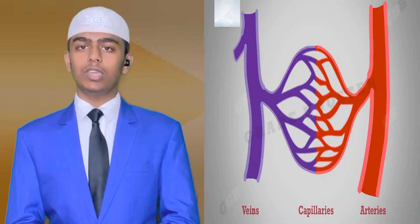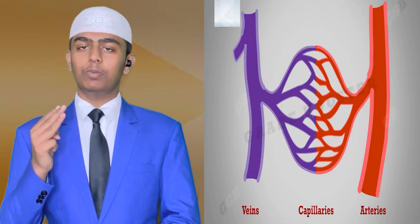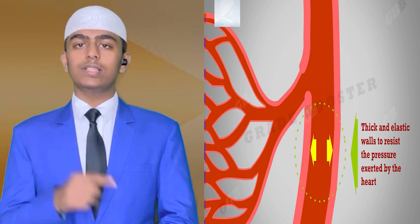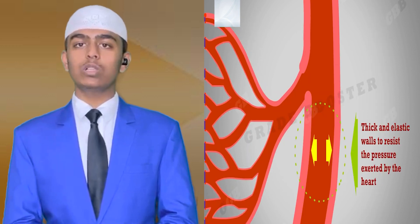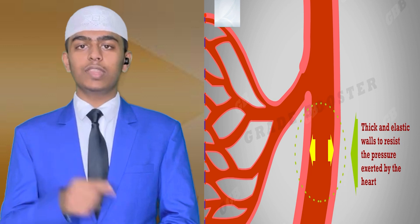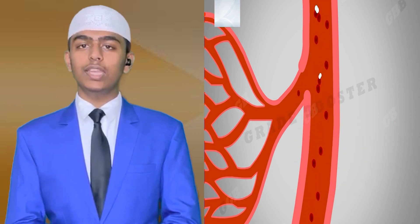The blood vessels present in our body are arteries, veins and capillaries. Arteries are the vessels that have thick and elastic walls to resist the pressure exerted by the heart. They carry oxygenated blood from the heart to various parts of the body.